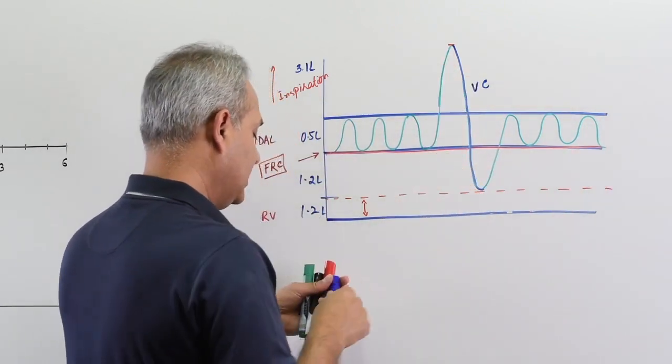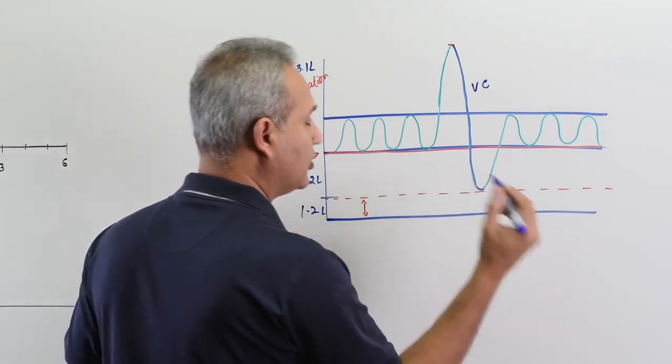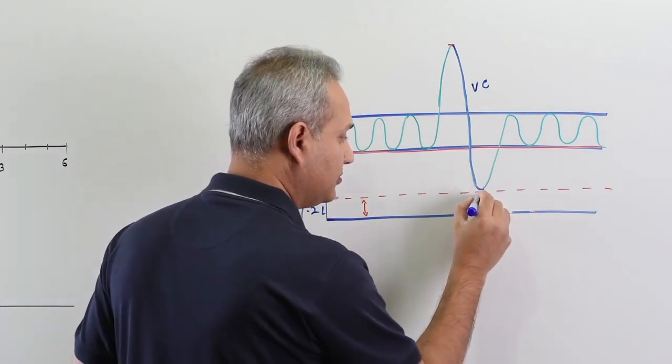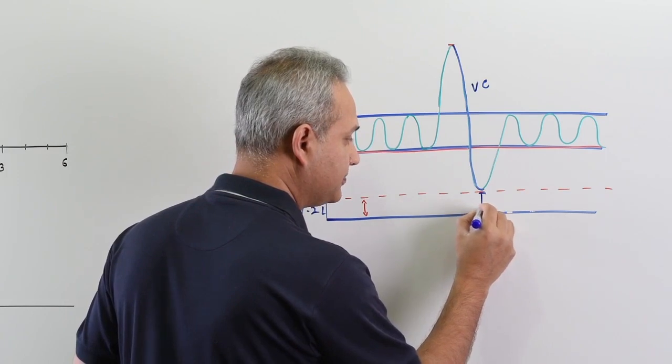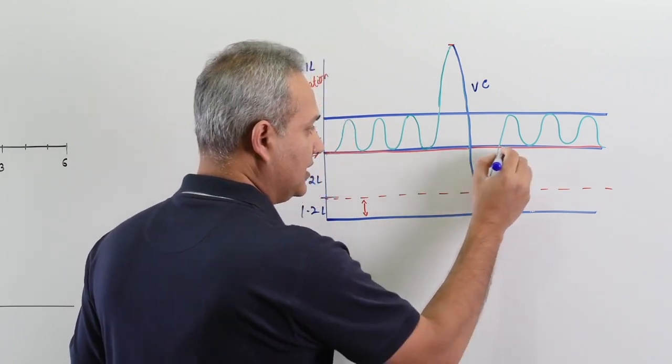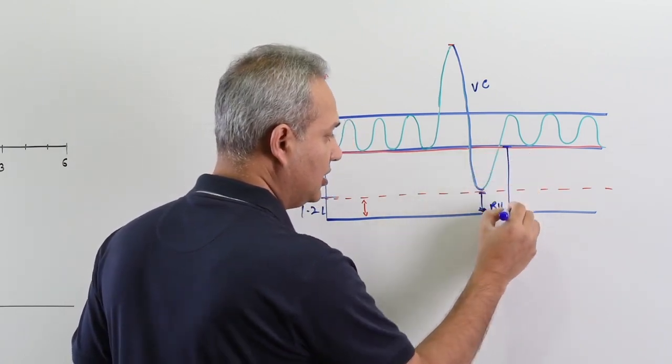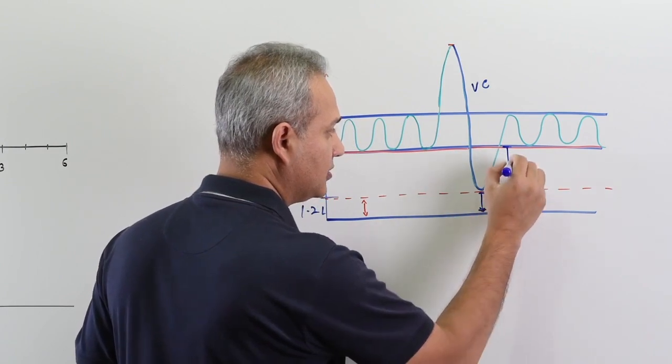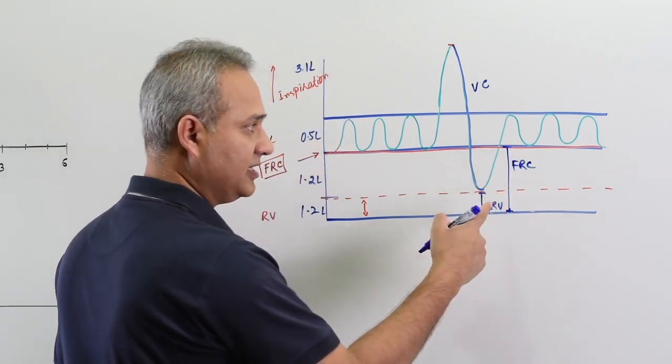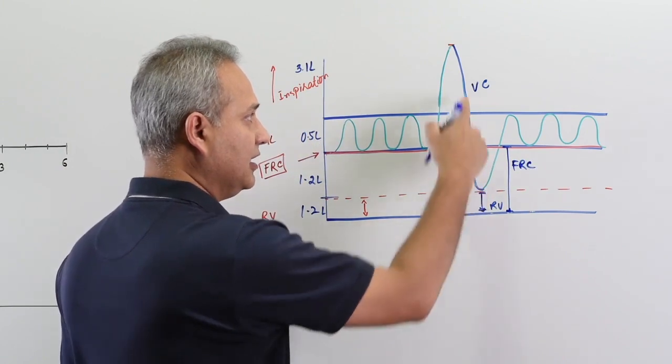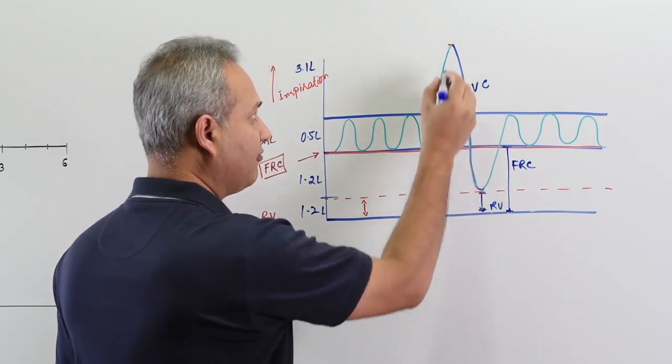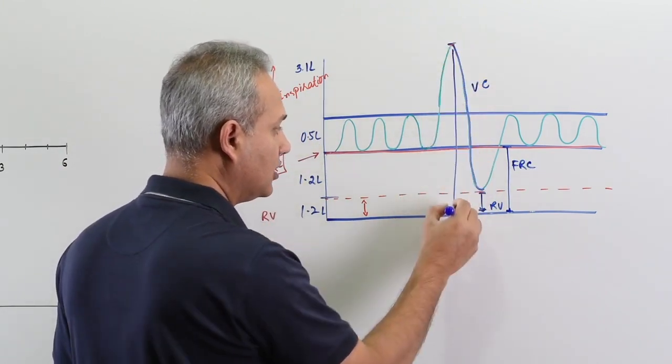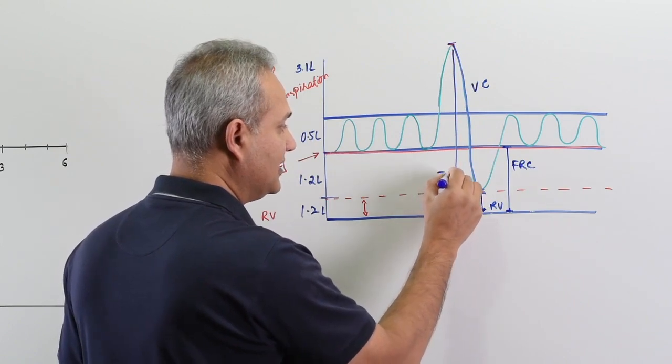So we are talking about this - forget about everything else now. The volumes that we should know and capacities: residual volume, keep an eye on that; functional residual capacity FRC, keep an eye on that; vital capacity itself; and finally total lung capacity TLC.